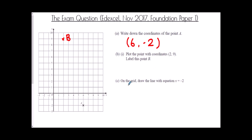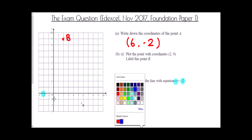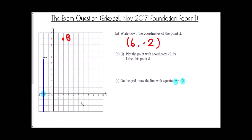Finally, draw the line with equation x equals negative two. Since it's x, we look at the x-axis and find the value negative two. We draw a vertical line through that point, and there is the line x equals negative two.